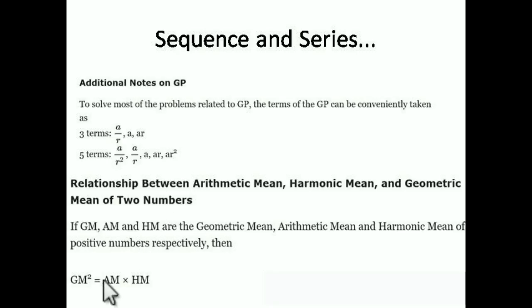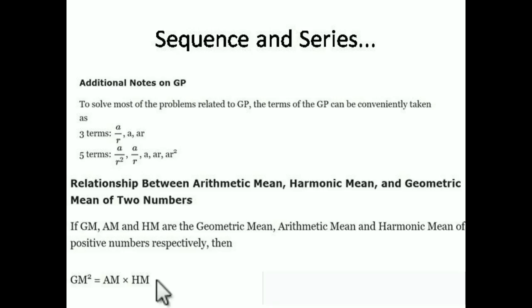This is a very important formula, frequently asked in many competitive examinations like GUJCET, Maharashtra CET, Karnataka CET, and others: the relationship between AM, GM, and HM. GM² = AM × HM. This is very important — you must remember it. Questions from this chapter are straightforward applications of formulas.